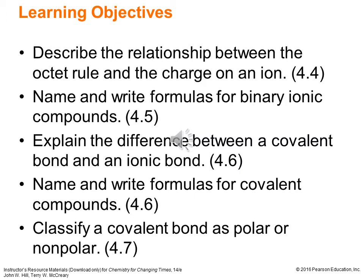We'll describe the nature of the attraction that leads to formation of an ionic bond, one of the types of bonds we'll encounter, and we'll write symbols for common ions and determine their charges. We'll describe the relationship between the octet rule and the charge on an ion. We'll name and write formulas for binary ionic compounds — binary meaning just two different elements involved. We can have ternary and higher, but we'll focus on binary first. We'll explain the difference between a covalent bond and an ionic bond, and name and write formulas for covalent compounds. We'll also classify a covalent bond as either polar or non-polar.